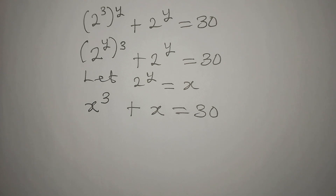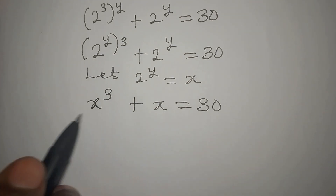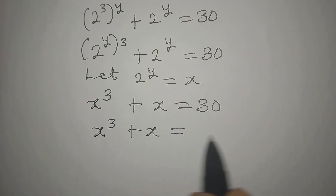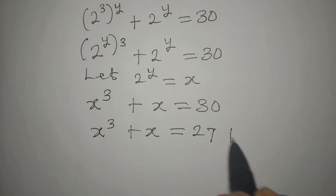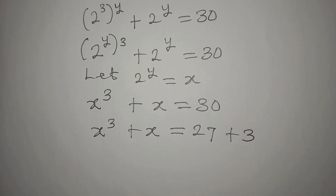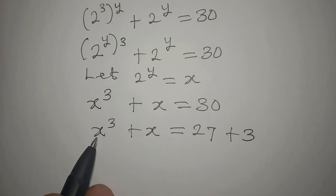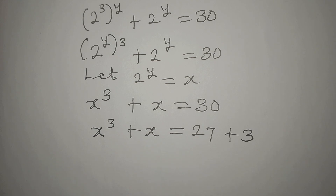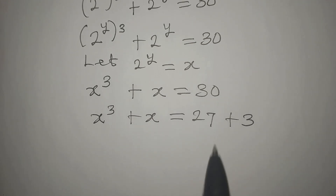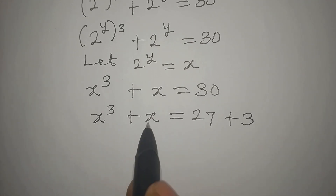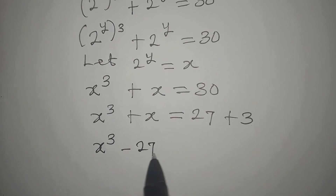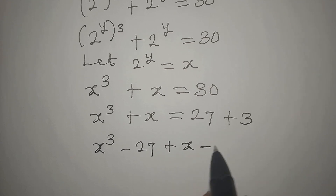Now, let's express 30 in this format. x to the power of 3 plus x can be equal to 27 plus 3. I did it like this because 27 can be written as a power of 3, and then this 3 will represent the x. We are solving this completely, so we can't stop at this level yet. Take this to this and bring this together, so we're going to have x to the power of 3 minus 27, then plus x minus 3.